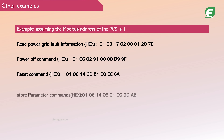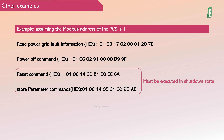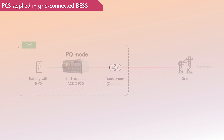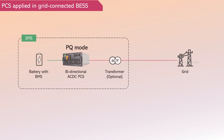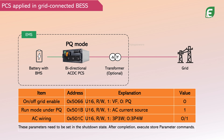It should be noted that reset and store parameter commands must be executed when the PCS is in a shutdown state. After introducing the communication commands between the PCS and EMS, we then explain several other common settings. The most common application of the energy storage system is in grid-connected scenarios. In this case, the PCS should be set to PQ mode.